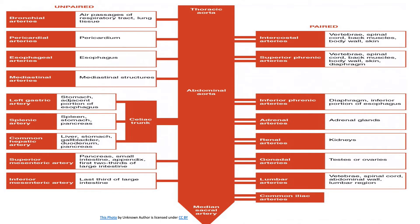Bronchial arteries are paired visceral branches that supply bronchial and pericardial tissue and the visceral pleura. Mediastinal arteries supply the lymph glands and loose areolar tissue in the posterior mediastinum. Esophageal arteries are unpaired visceral branches that arise anteriorly to supply the esophagus. Pericardial arteries are small unpaired arteries arising anteriorly to supply the dorsal portion of the pericardium. Superior phrenic arteries are paired parietal branches supplying the superior portion of the diaphragm. Nine pairs of intercostal and subcostal arteries supply the intercostal spaces, with the exception of the first and second, which are supplied by a branch from the subclavian artery.